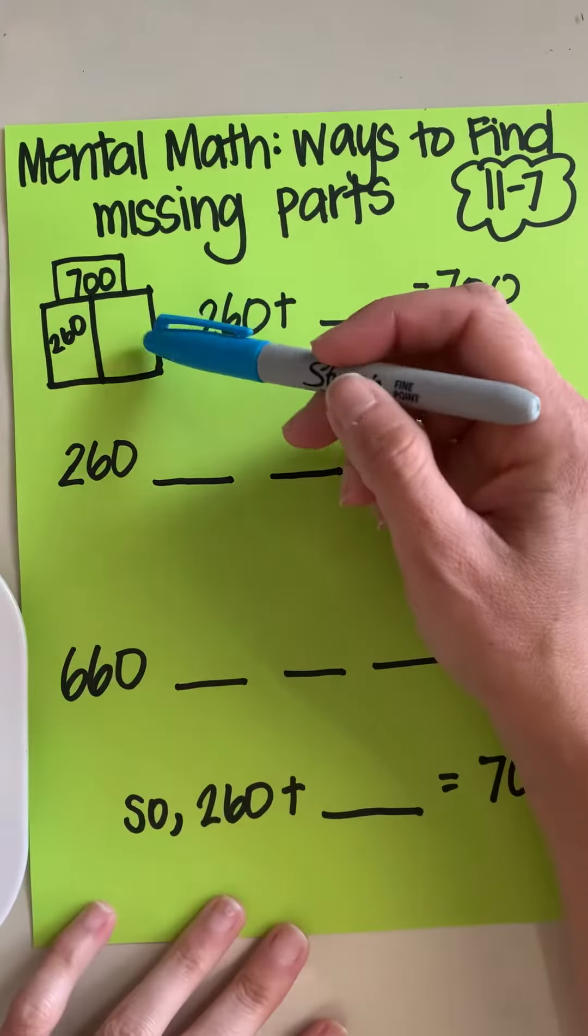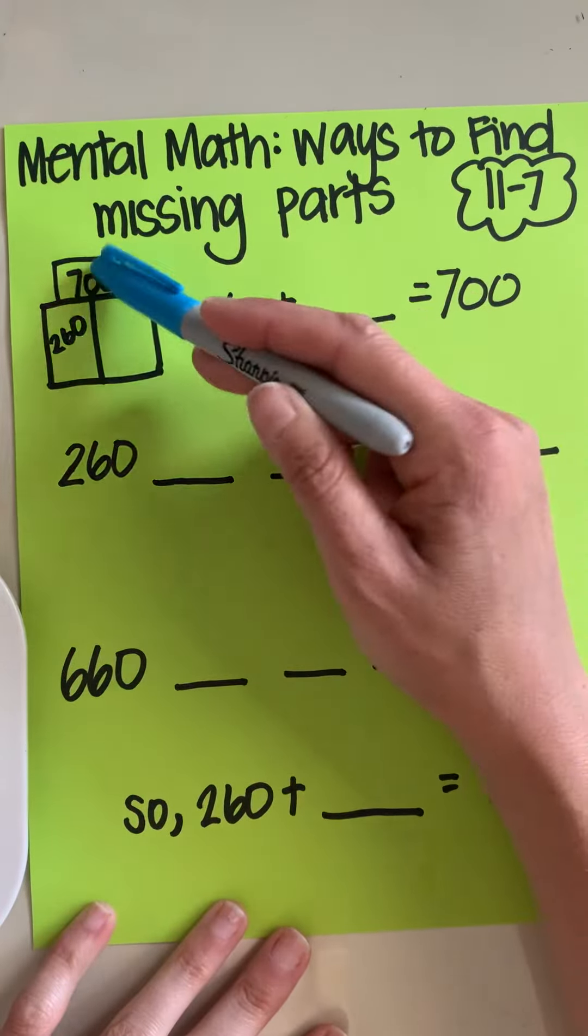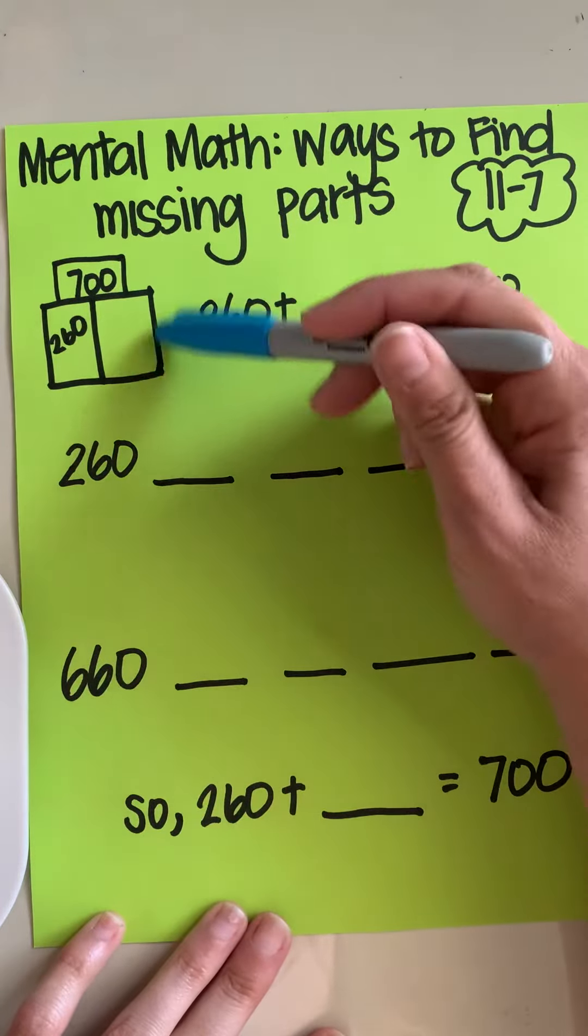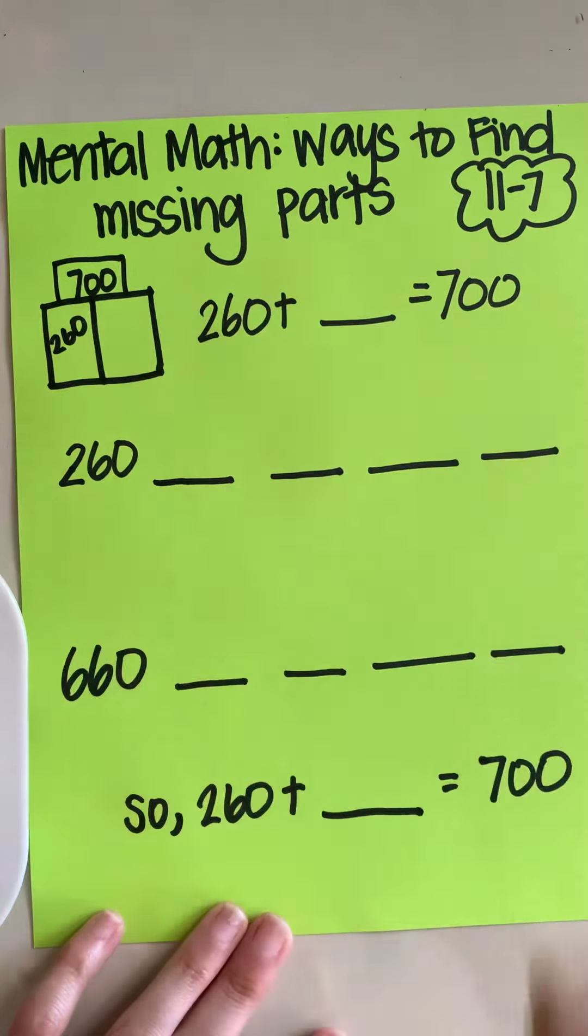We've seen this, but we haven't seen it for a while. It's our part-part-whole. Okay, so the whole is 700, one part is 260. I need to find this missing part.